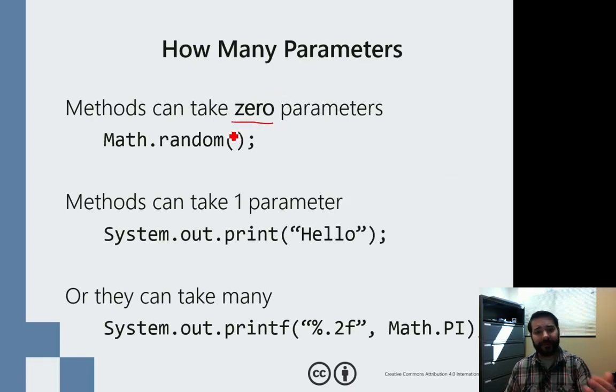For example, let's think about Math.random(). That's a method that was pre-built for us, but notice it takes 0 parameters. I don't have to give a method something in order to get something back.